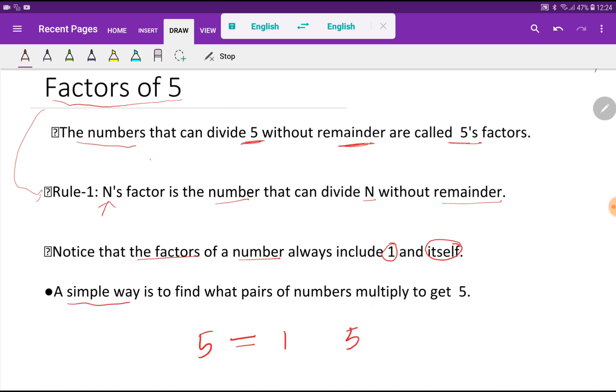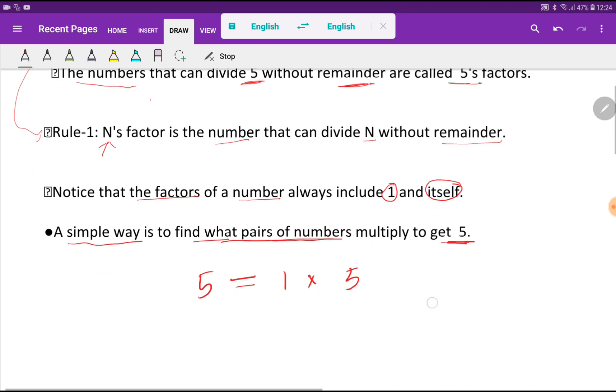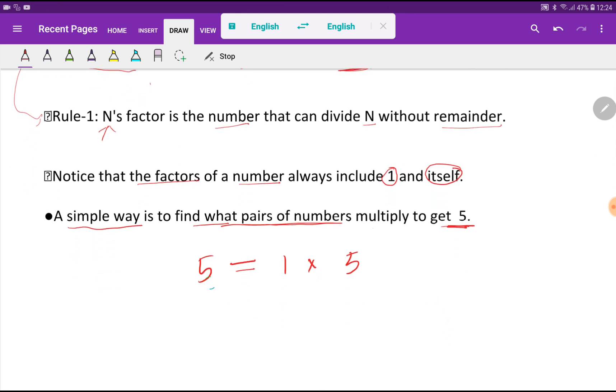A simple way is to find what pairs of numbers multiply to get 5. If I multiply 1 times 5, then I get 5. So 1 and 5 are the factors of 5. 1 is the lowest factor and 5 is the highest factor.